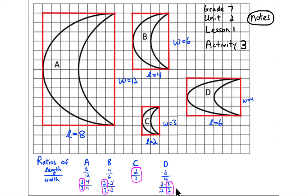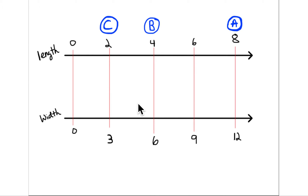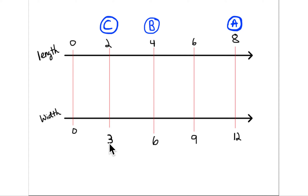You're supposed to put together a ratio table with lengths and widths and write each ratio. I labeled each moon and wrote down the ratios. You also need to draw a double number line: take the longest length and width and place them farthest from zero — that's 8 for the length and 12 for the width — then divide into equal parts. Half of 8 is 4, half of that is 2, giving 2, 4, 6, 8. The corresponding widths are 3, 6, 9, 12.